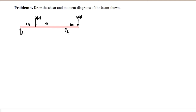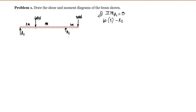In order to solve for R2, we summate moments at R1 — summation of moment at R1 is equal to zero, taking clockwise rotation as positive. The 60 kN load will rotate clockwise, so it is positive: 60 multiplied by its moment arm of 2 meters. R2 will rotate counter-clockwise, so it is negative: R2 multiplied by its moment arm of 2 plus 4, which is 6 meters. The 30 kN load rotates clockwise so it is positive.